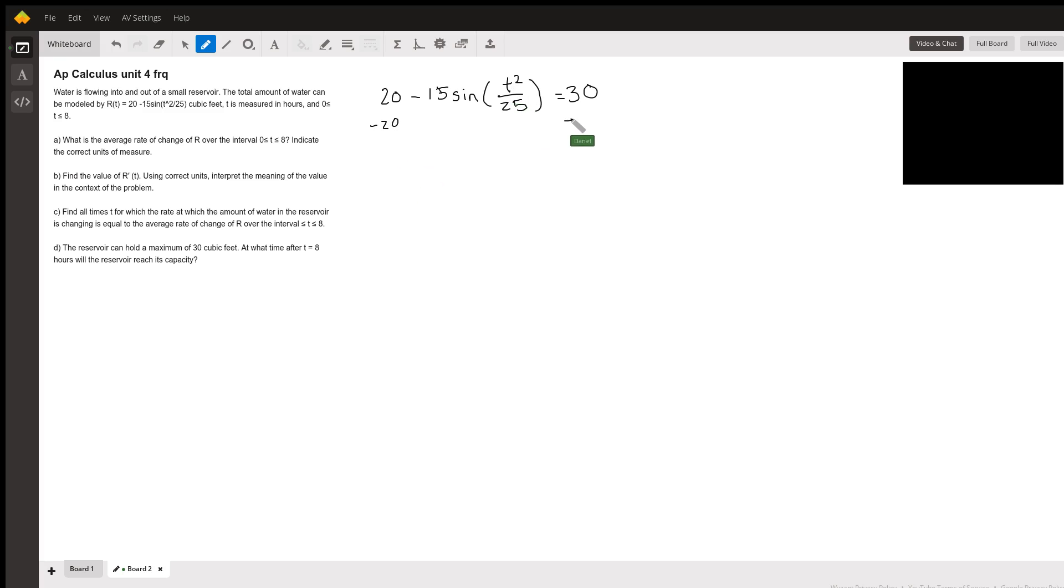So the first thing I did, subtract 20 from both sides. I get negative 15 sine of T squared over 25 equals 10. Now normally I would take the arc sine on both sides to get rid of the sine and then solve for T algebraically. However, that gave me non-real answers.